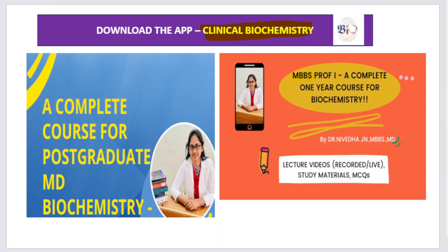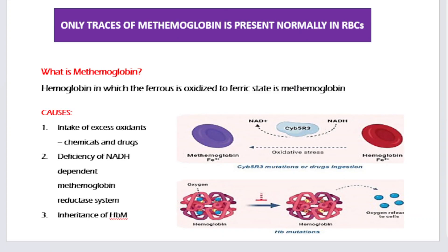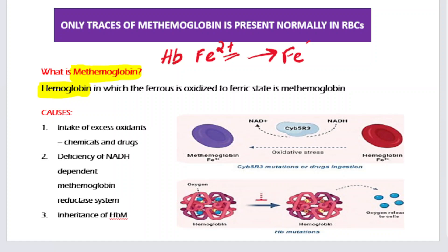Only traces of methemoglobin is present normally in RBCs — why is that? To understand this, what is methemoglobin? Methemoglobin is hemoglobin in which the iron is normally in the ferrous state, but when this ferrous state is oxidized to the ferric state, it becomes methemoglobin.